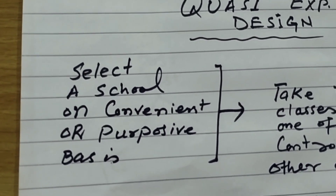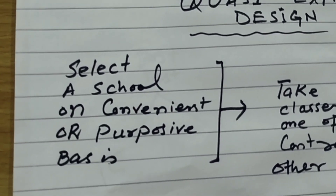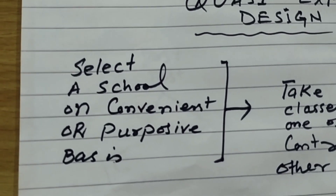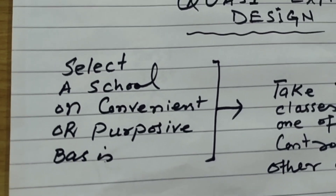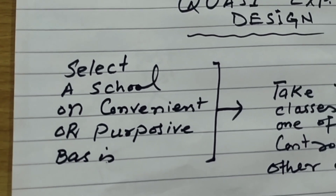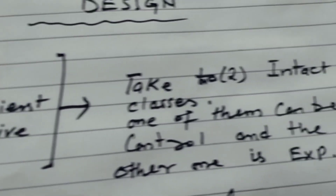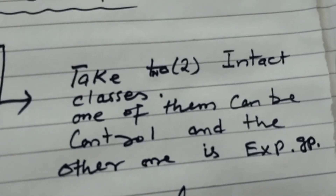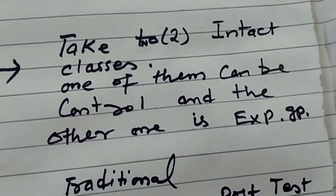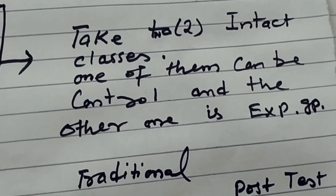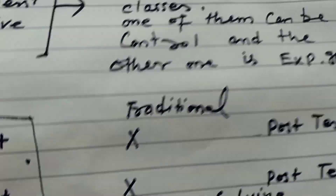You can also select two different schools in one location. There are many characteristics to consider. They can take one control and one experimental group from their classes. After selecting a school, you have taken two intact classes, calling one the control group and the other the experimental group.